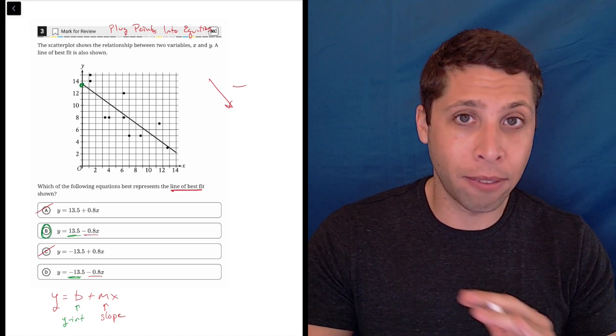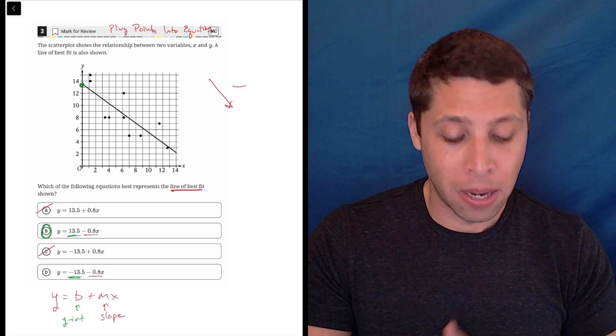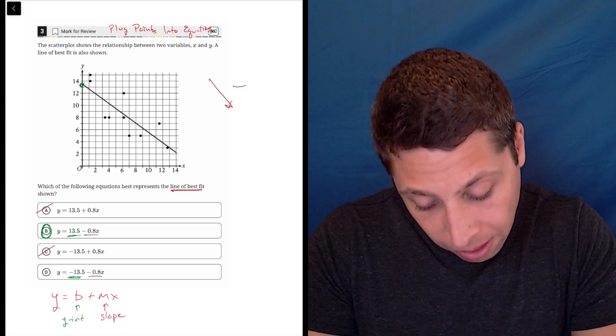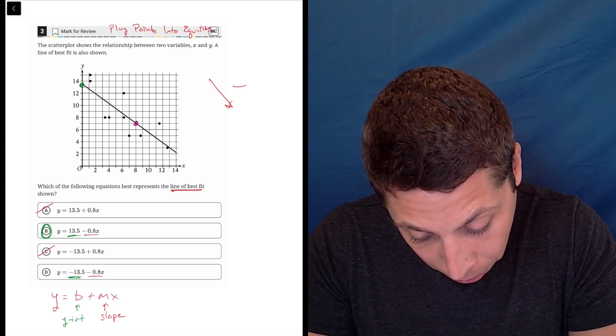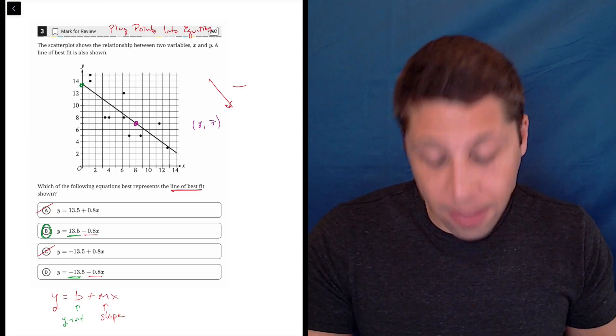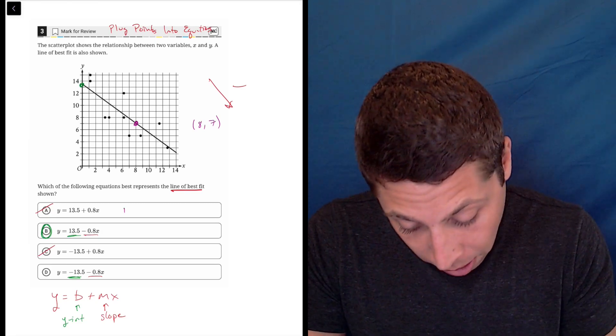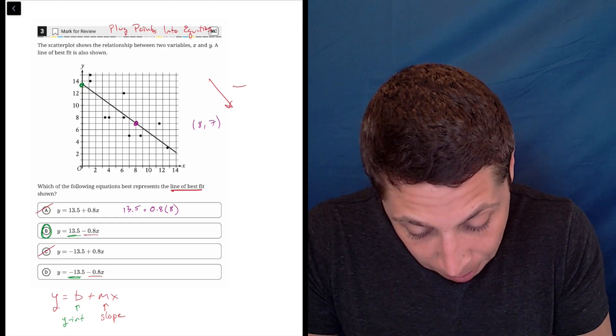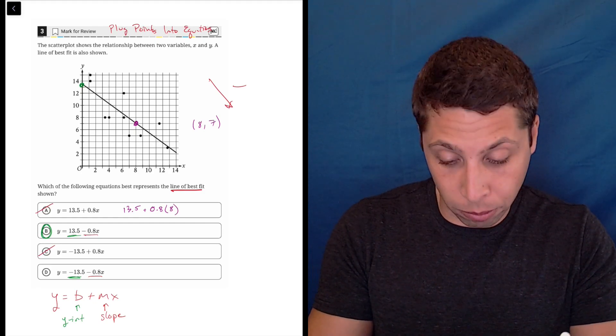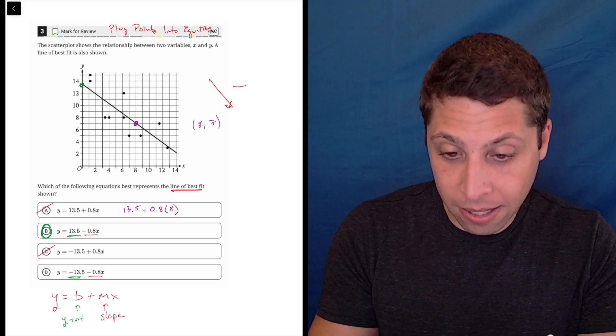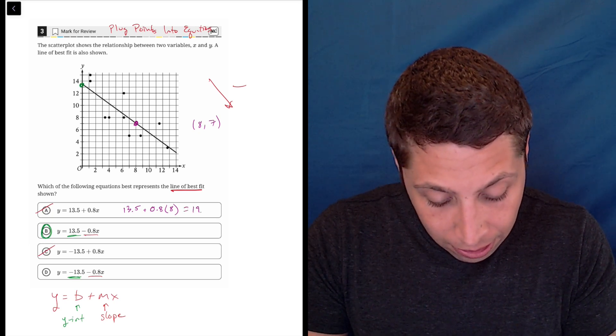I would not have used plug points into equations here. But if you were in any way unsure, you could pick a point off of this thing, something that's kind of hitting a nice part of the grid, and then plug that in. So this would be the 8,7. And then you could plug it into the answer choices. So 13.5 plus 0.8 times 8. This is where the calculator would come in.